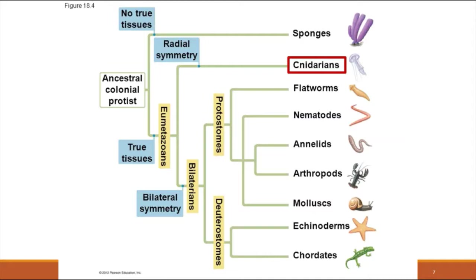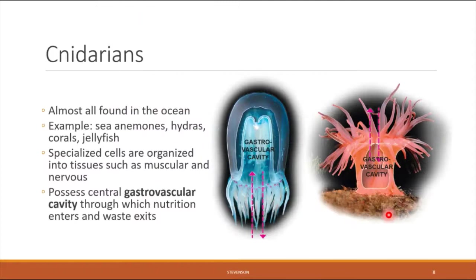The next phylum is the cnidarians — pronounced with a silent C, so you say 'nidarians.' Cnidarians are your jellyfish and are found almost exclusively in the ocean. Examples include sea anemones, hydras, corals, and jellyfish.